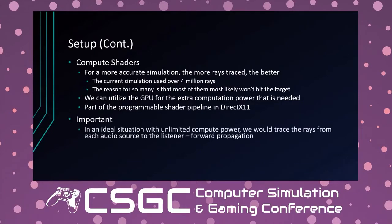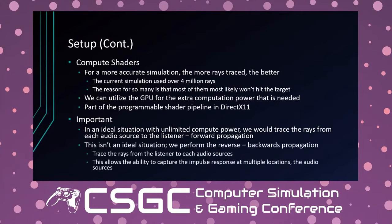In an ideal situation with unlimited compute power, we'd trace rays from each audio source to the listener — forward propagation. Instead, we use backward propagation: tracing rays from the listener to each audio source. This allows capturing impulse responses at multiple audio source locations simultaneously rather than one at a time, speeding things up and justifying the 4 million rays since we're testing against multiple sources.